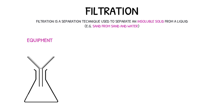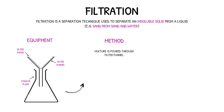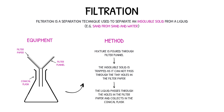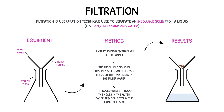To carry out this process, you would need a conical flask and a filter funnel that is lined with filter paper. Your mixture of sand and water is then poured through the filter funnel. However, the sand is trapped in the filter funnel, as it is unable to pass through the tiny holes in the filter paper. The water, however, is able to pass through and collects in the conical flask. At the end of the process, the insoluble solid trapped in the filter paper is called the residue, and the liquid collected in the conical flask is called the filtrate.